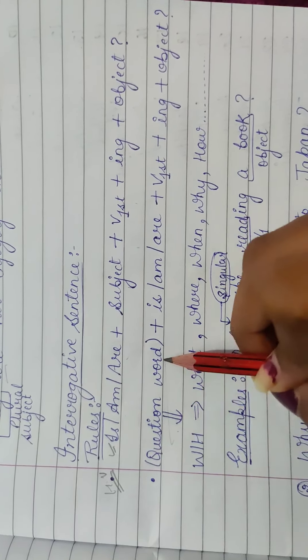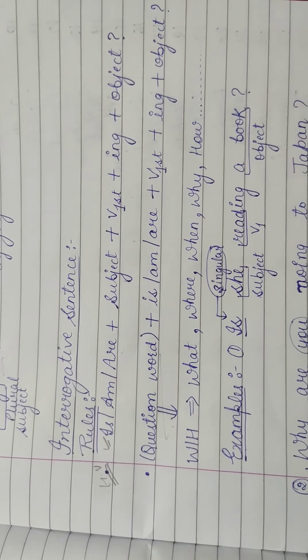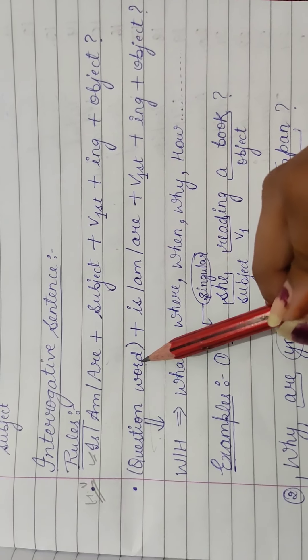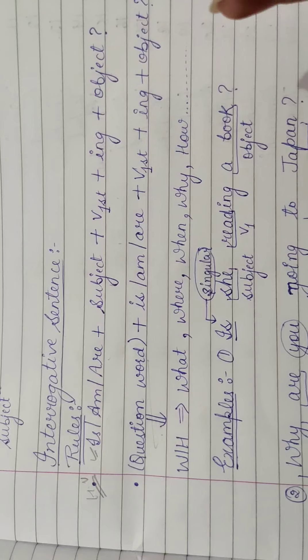To ek to yeh wala hoogay, jab helping verb wala question puchna ho. Phir ek hoota hai question word wala - jiasse ki what, why, where, when, who, how much, how many, is tari ki jo hootate hai. Voh wala ki sabse pahle usume, phir question word aajatay, phir as it is. Ab aapka vohi chalta hai, is, am, are wagaira aagya.